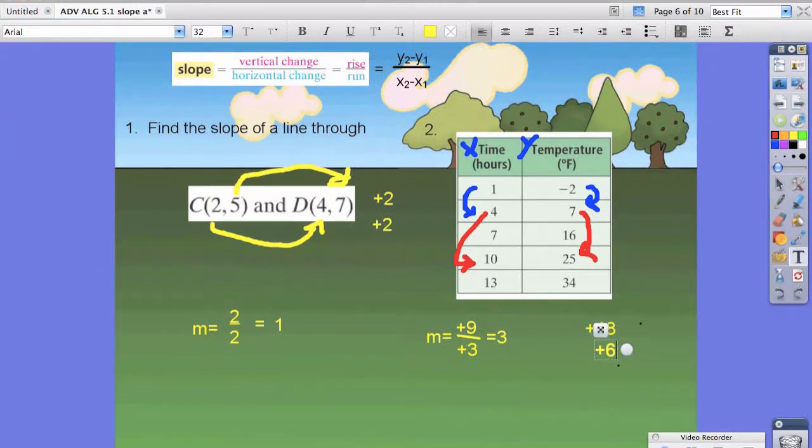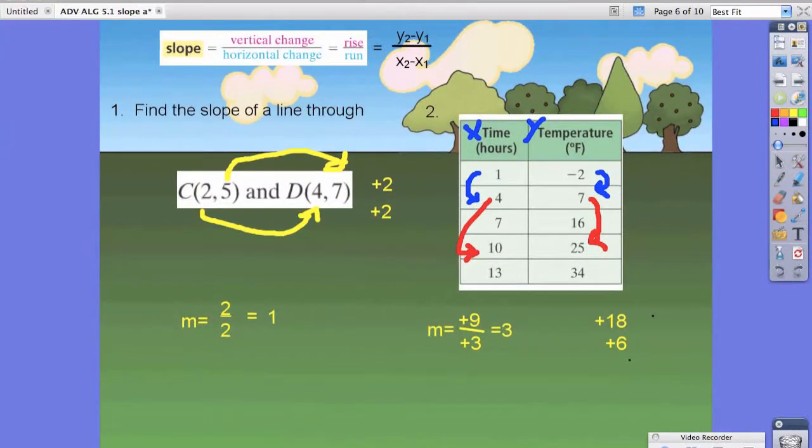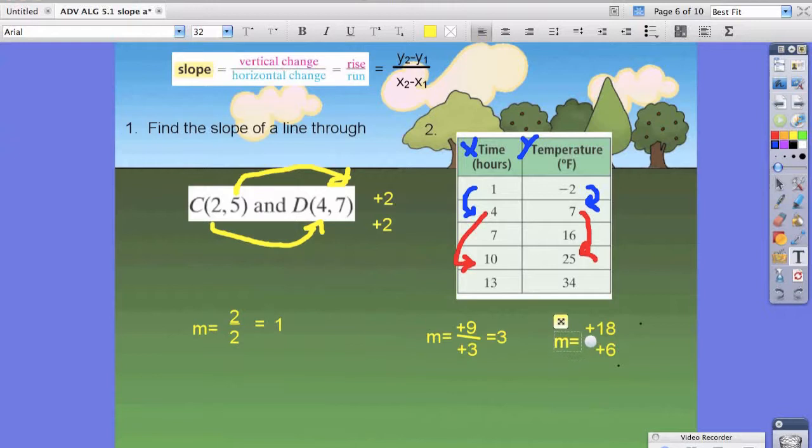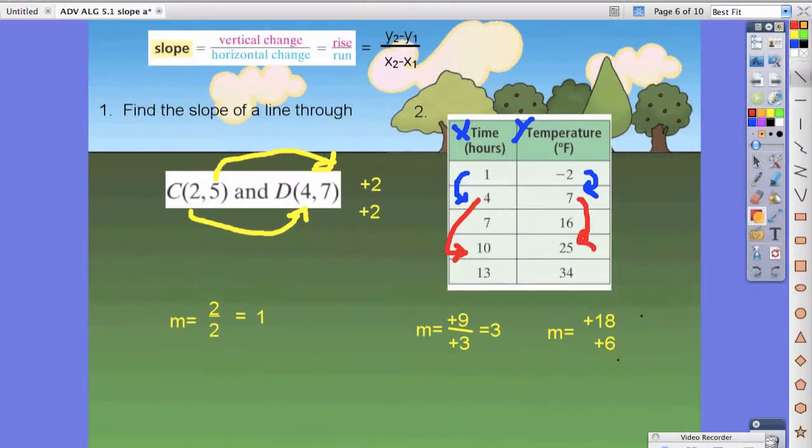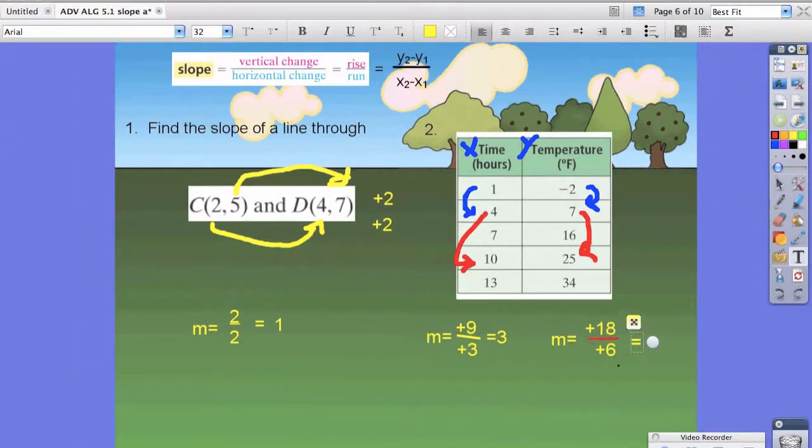Now notice in the red we skipped two spots, so we went from 7, skipped 16, and went to 25. When we did the y we had to do the same thing. Now when you calculate this slope, or this m, well you'll know that 18 divided by 6 also turns out to be 3. So whichever values you chose, you still got the same slope.